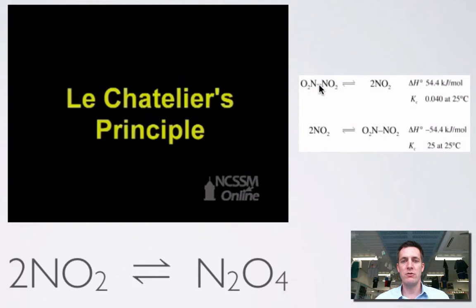So N2O4 turning into 2NO2, that's the reverse process. We're told that the enthalpy change for this process is 54.4 kilojoules per mole. In other words, it's positive and this process is endothermic, so this backward reaction here is endothermic. It makes things get colder. There's some Kc information here about an equilibrium constant which we won't worry about for now. Here's the forward reaction: the brown NO2 turning into the colorless N2O4.